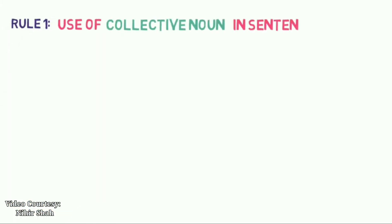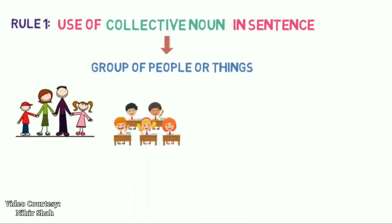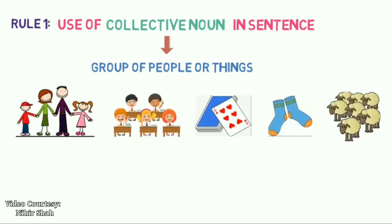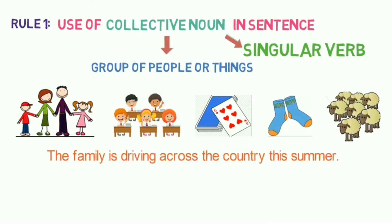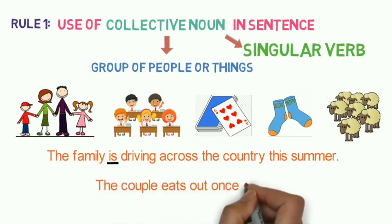Rule 5 also covers the use of collective nouns in a sentence. A collective noun is a name for a group of people or things, such as 'family,' 'class,' 'pack,' 'pair,' and 'flock.' A collective noun generally takes a singular verb because it is singular. For example: 'The family is driving across the country this summer.' All members are acting as one unit, so we use 'IS.' Another example: 'The couple eats out once a month.' Both husband and wife are going together, so we use 'EATS.'